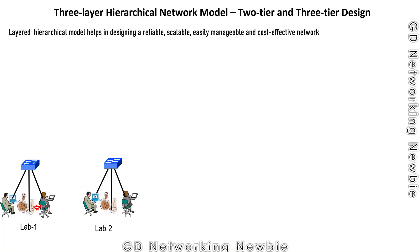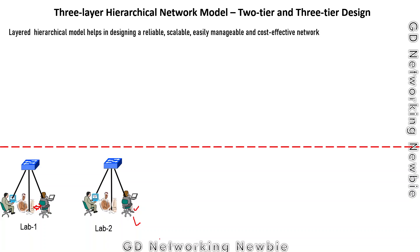In the same way, we can have a second lab, and in the second lab as well, a switch can be used to provide access to the network needed by these computers or end nodes. These end nodes can be an IP phone, a printer, any computer, or a laptop. So these switches are providing access, and we call these devices to work on the access layer.